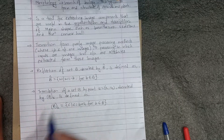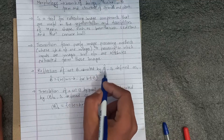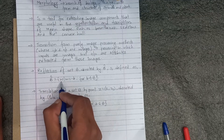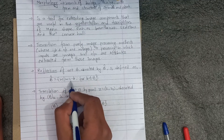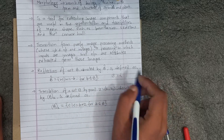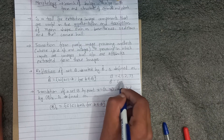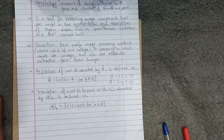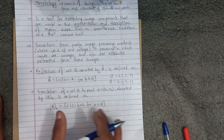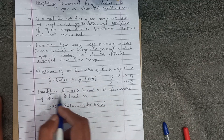How do we implement a translation? First, what is reflection? The reflection of set B, denoted by B-cap, is defined as: B-cap equals the set of w such that w equals minus b, for b belonging to B. For example, if B equals {1, 2, 3}, then B-cap equals {-1, -2, -3}. This is the coordinate pair — this is the reflection.